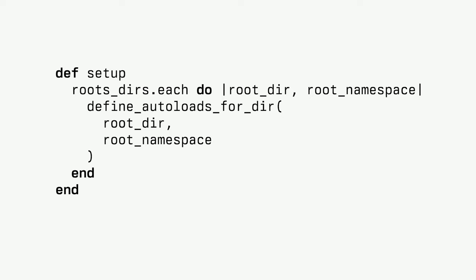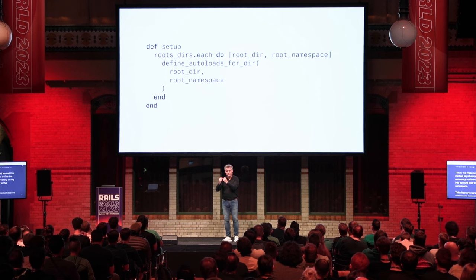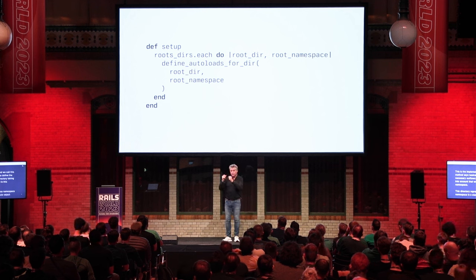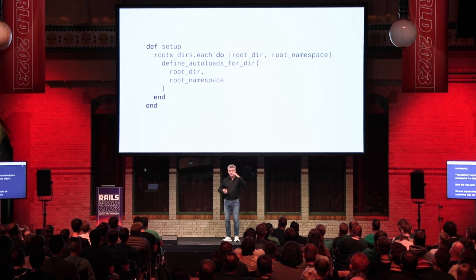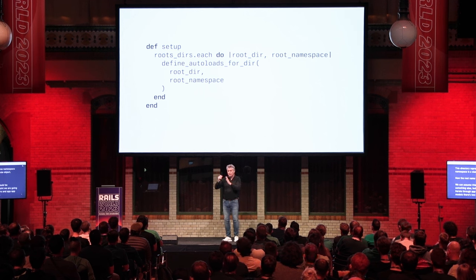So whenever you refer to UsersController, if it's not loaded it will be loaded thanks to what Zeitwerk has done for you. How is that done? We iterate through these root directories and call a method that says: please define the necessary autoloads in this directory, taking into account that we are now in this namespace — where a namespace is a class or module object. For the root directories the namespace is Object, so we iterate through app/controllers and app/models with Object as the second argument.